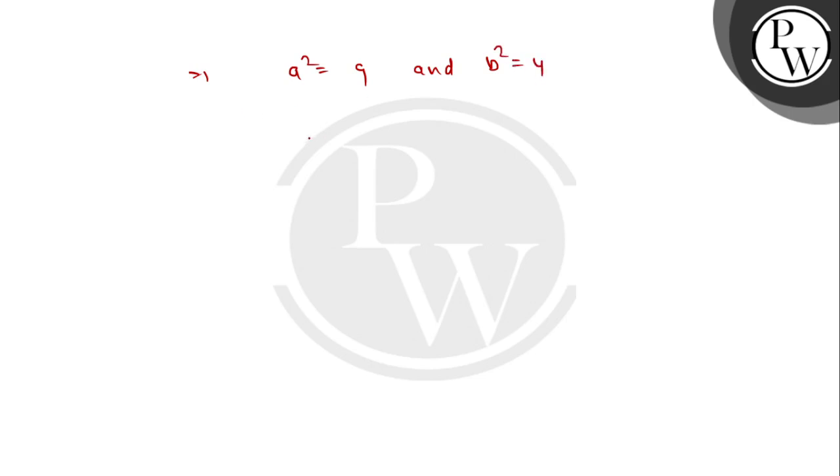We need to find the eccentricity. The eccentricity formula is e = √(1 + b²/a²). So e = √(1 + 4/9).